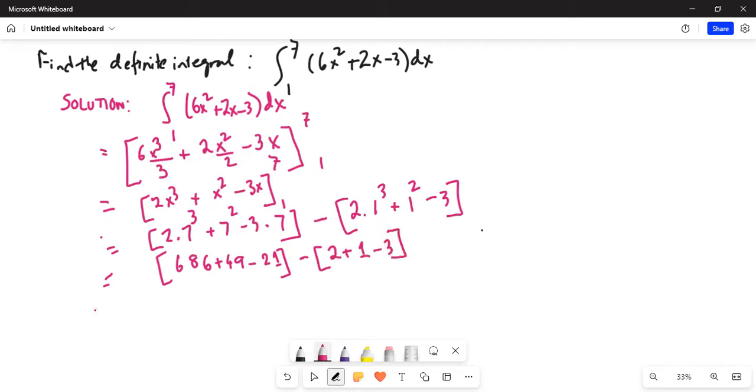This is equal to 686 plus 49 minus 21 is equal to 714 minus 0 and the final answer is 714. This is the value of the definite integral that we were asked to find.